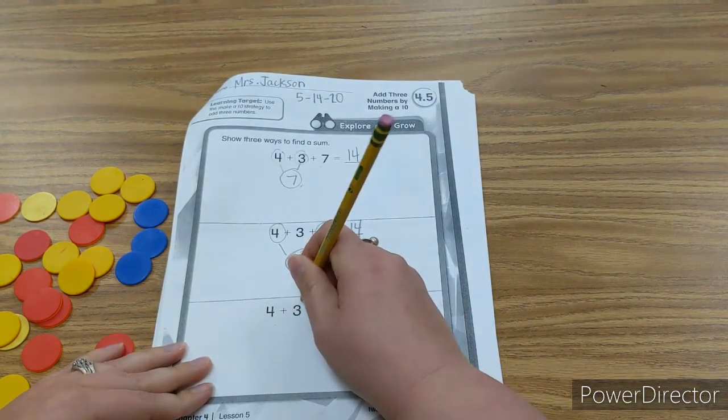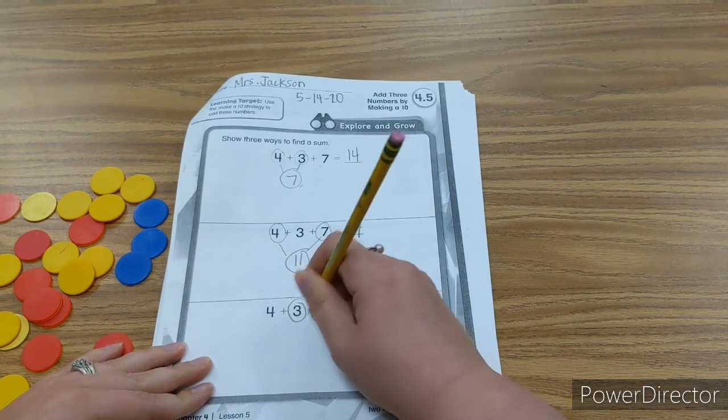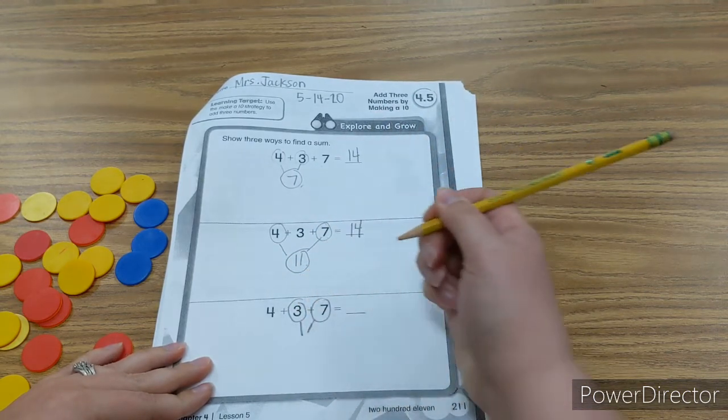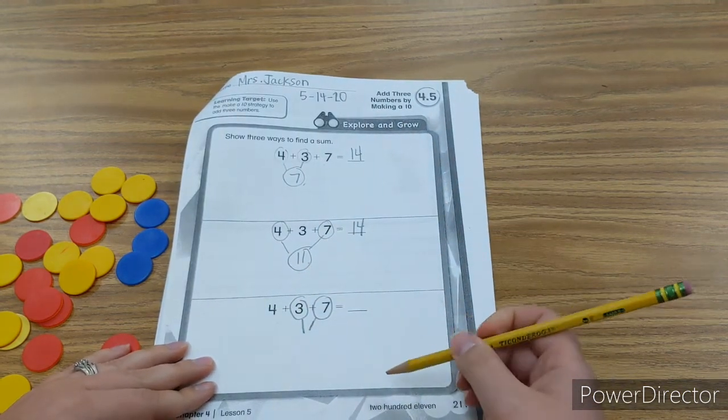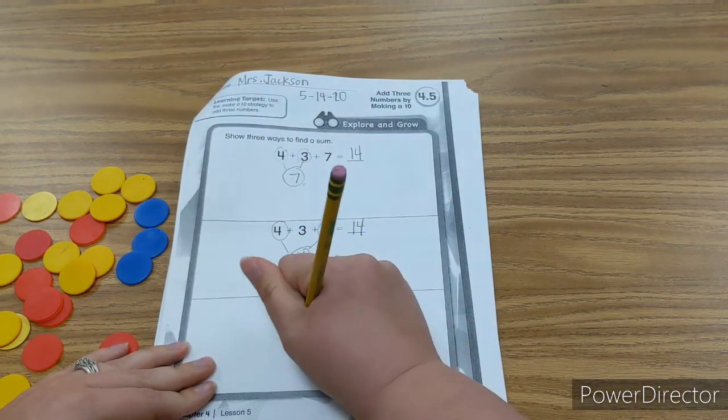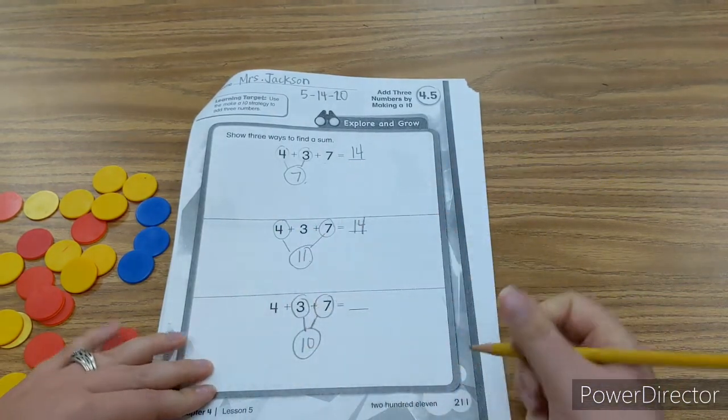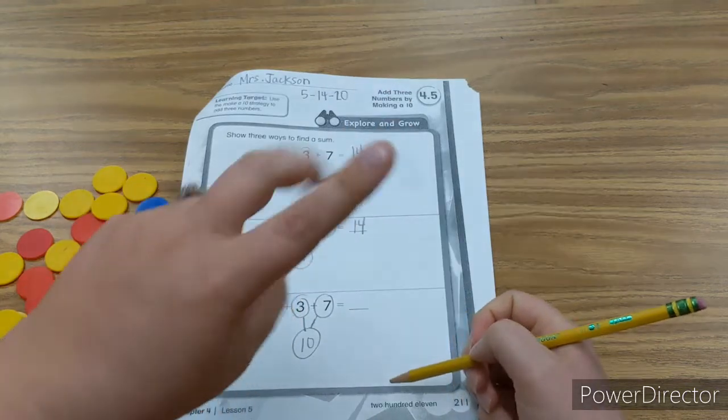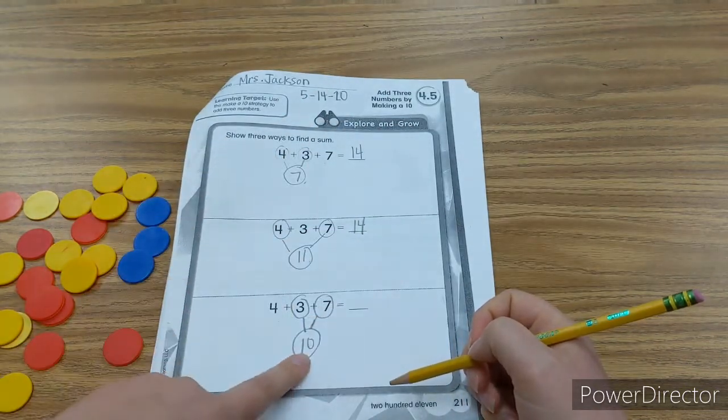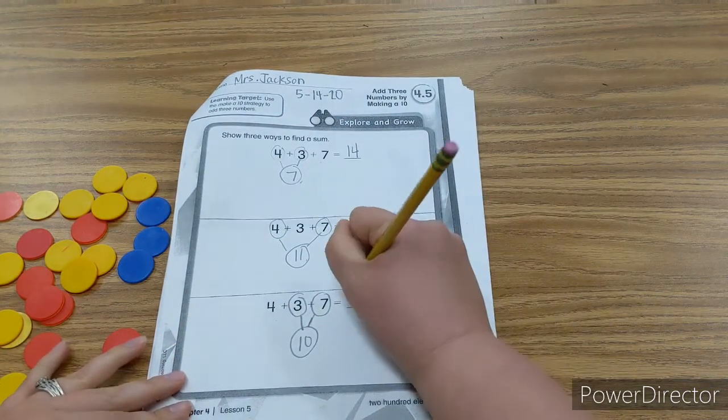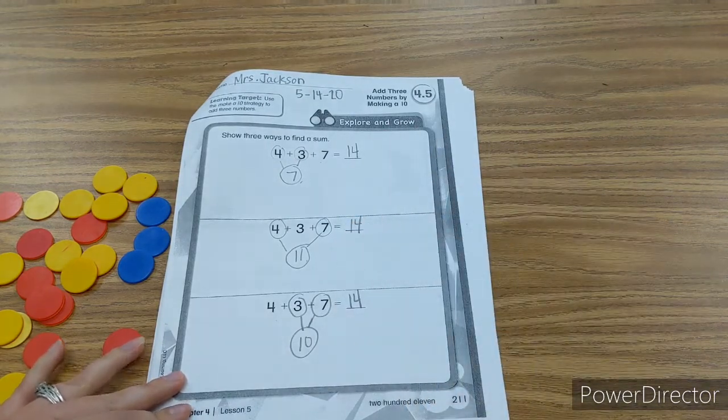And the next way we could do it is 3 plus 7. And 3 and 7 is a way to make 10. You can also do it on your fingers. So 7, 8, 9, 10. And 10 plus 4 we know is 14.